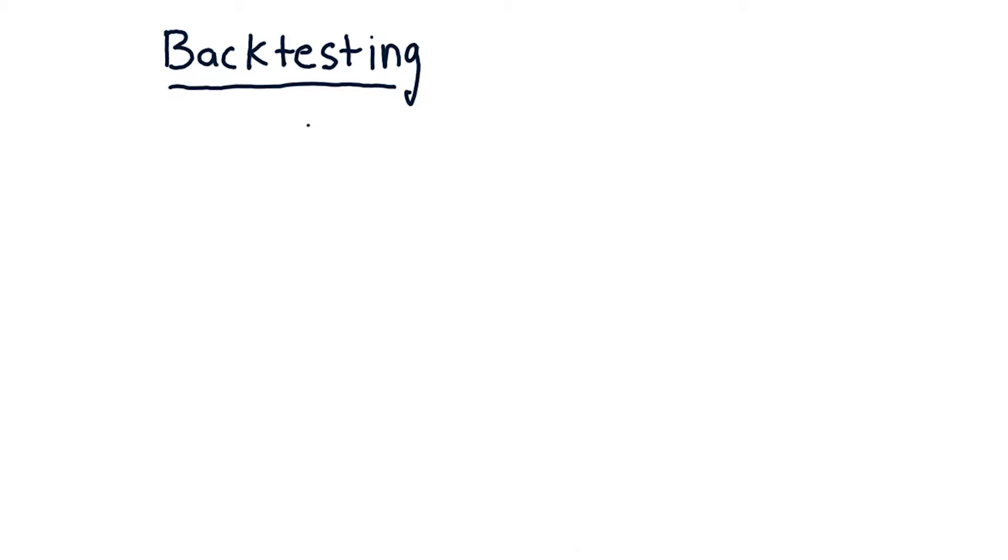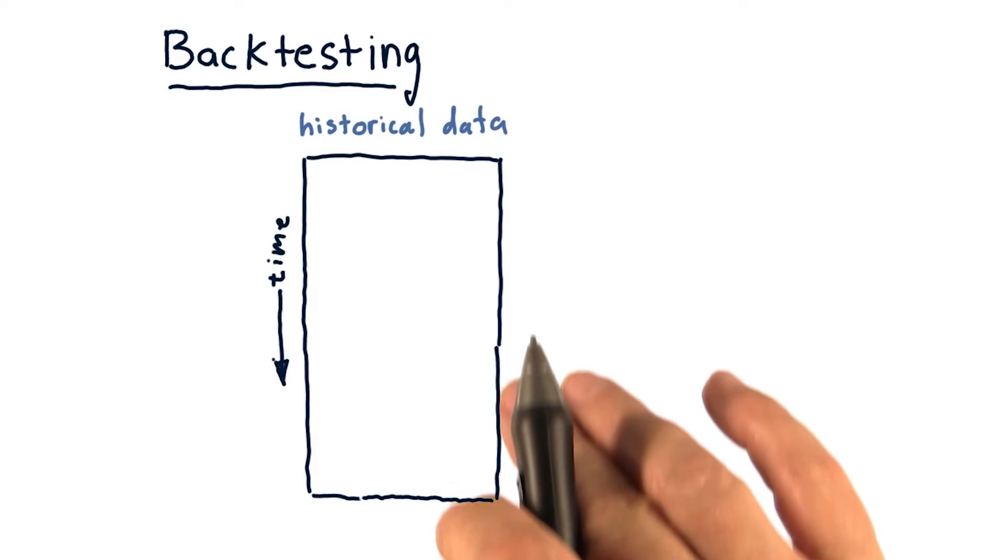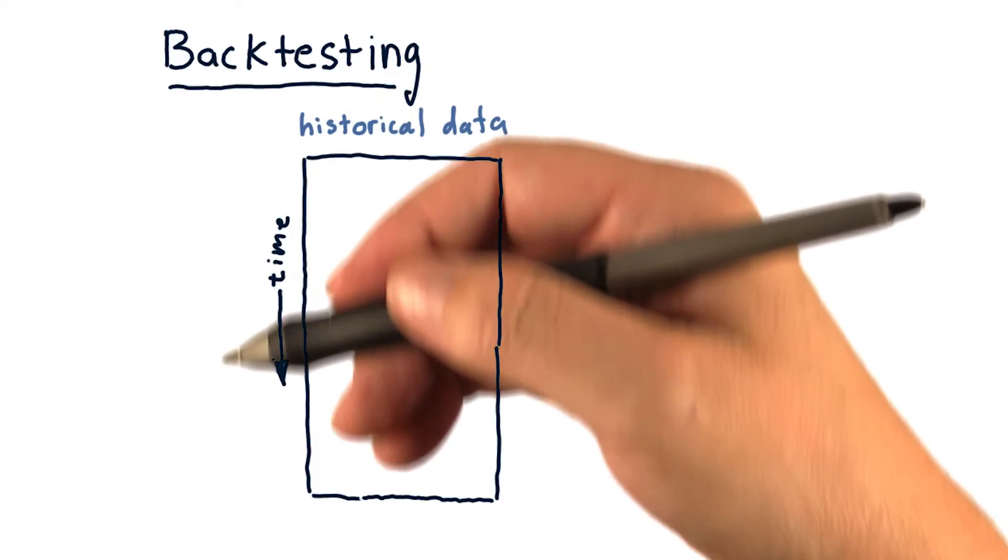So that means you roll back time and you test your system. So here's our historical data. As usual, it's organized with time coming down.